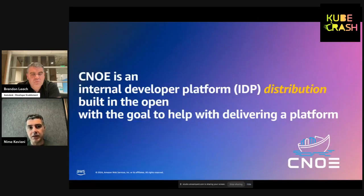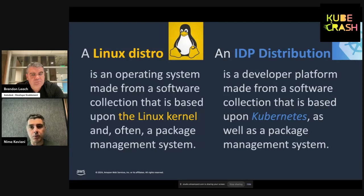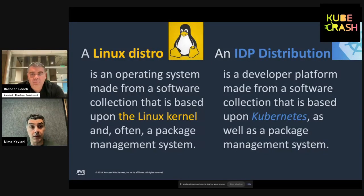This makes Canoe an internal developer platform distribution built on open source CNCF technologies. The reason I refer to it as a distribution is the analogy between the Canoe IDP and a Linux distribution. In a Linux distribution, you have the Linux kernel as the core and all these opinionated, self-selected open source tooling on top of it. In an IDP distribution, you have Kubernetes as the underlying platform and you choose open source technologies that sit on top of it to deliver the developer platform experience — Kubernetes as the base versus the kernel as the base.